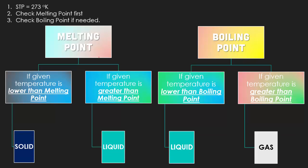The very first thing you have to do to determine what phase of matter it is, is to start with the melting point. If the given temperature is lower than the melting point, so if you're at STP, if your temperature is lower, then that means it's going to be a solid.